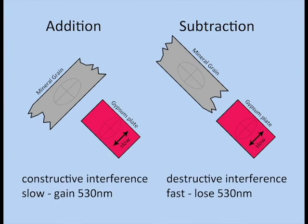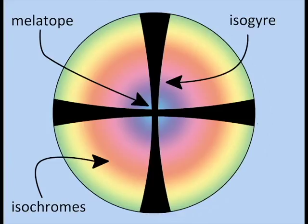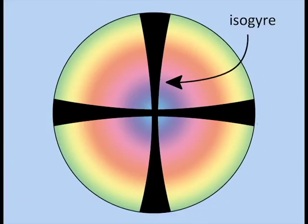Here we see a typical uniaxial conoscopic figure. The isogyres are the black lines where extinction occurs. This occurs because the light vibrations are parallel to the vibration direction of the polars.